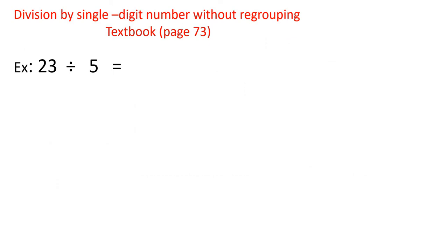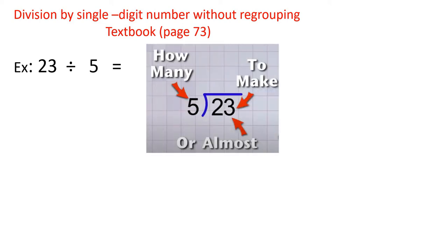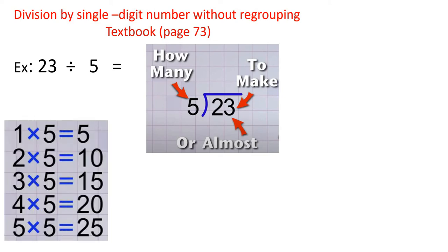Let's take this exercise: 23 divided by 5. I know it's not easy to find 23 on the times table of 5. So I will remember the times table of 5 — how many 5s make 23 or almost? Maybe I will have some remainder. Remember the times table for number 5: 1 times 5 is 5, 2 times 5 is 10.